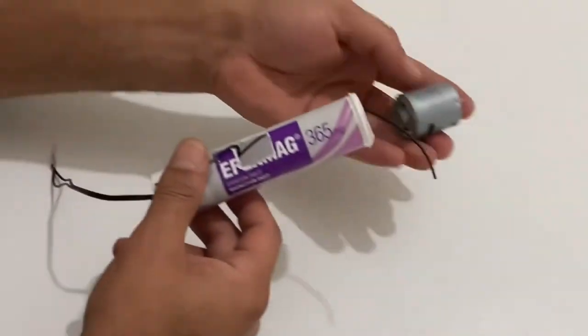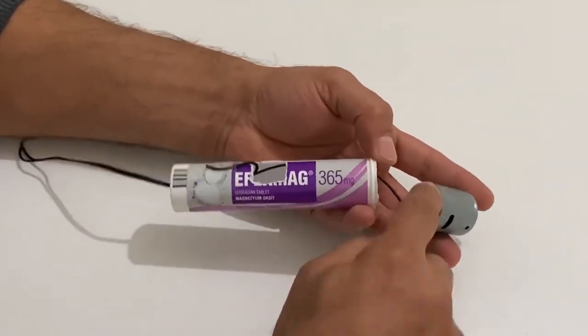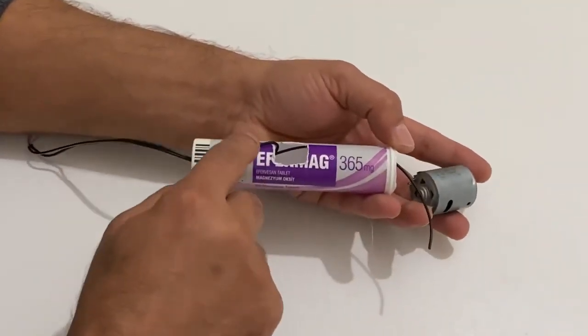Okay, now I am going to solder the cables to the DC motor, our on-off switch to the DC motor and on-off switch.